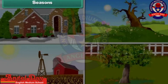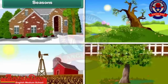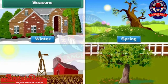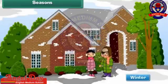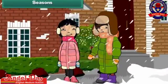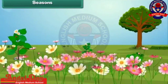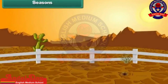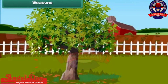There are 4 seasons in a year. They are winter, spring, summer and autumn. In winters, we wear woolens to keep ourselves warm. In spring, flowers blossom. Summers are hot. Trees shed leaves in autumn.